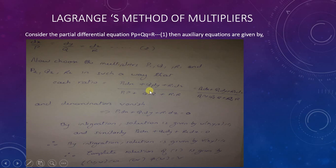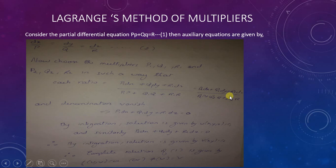Now choose multipliers P1, Q1, R1 and P2, Q2, R2 such that each ratio — P1 dx plus Q1 dy plus R1 dz, all over P1·P plus Q1·Q plus R1·R — equals P2 dx plus Q2 dy plus R2 dz, all over P2·P plus Q2·Q plus R2·R.